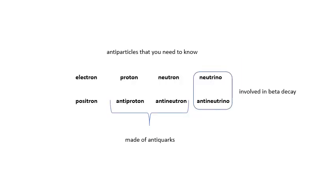The antiparticles that we need to know: electron and positron — we've waffled on about them a lot. Protons and antiprotons, neutrons and antineutrons. In a video coming up very soon, we're going to talk about quarks — protons are made of quarks, and antiprotons and antineutrons are made of anti-quarks. These are the heavy particles. Neutrinos also have anti-neutrinos and they're involved in beta decay, as we've already seen.